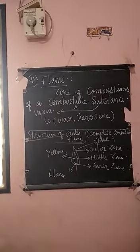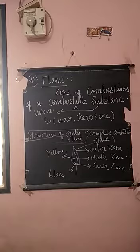So the structure of a candle flame has three main zones. The first one is the outer zone, the next one is the middle zone, and the third one is the inner zone. See the picture — the outer zone is blue in color, then the next one is yellow in color, and the last one is black in color.